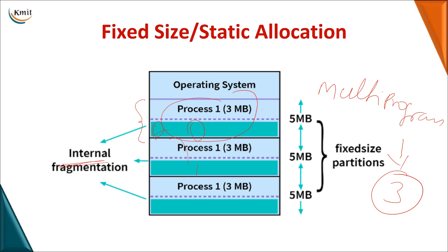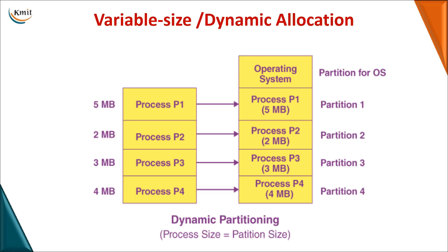This wastage of memory within a block is called internal fragmentation. It occurs when the fixed block size is greater than the process size, leaving the remaining space unusable. Internal fragmentation can be overcome by moving to variable-size allocation.